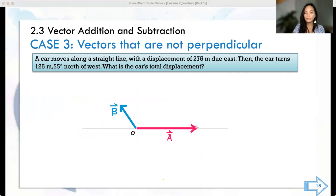Vector is tail to head just like that. This is the resultant vector, right? Can I still use Pythagorean theorem for this one? Yes or no?